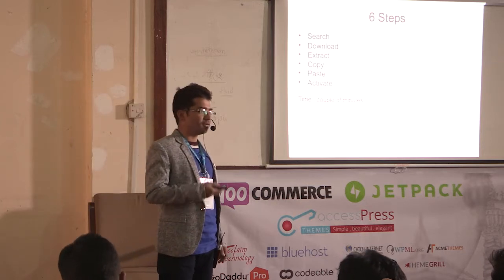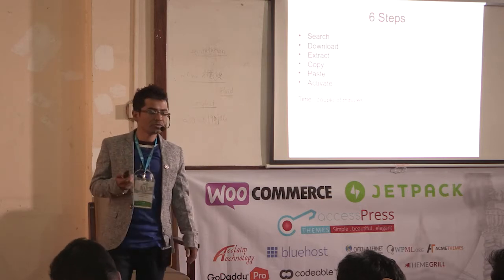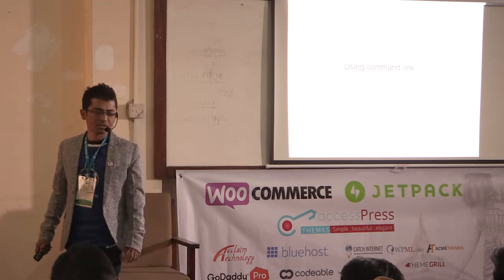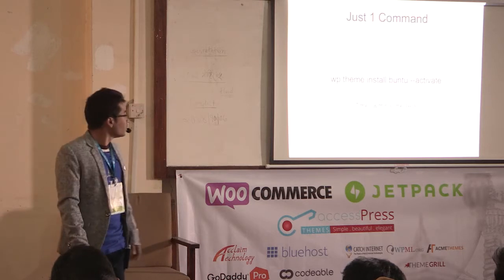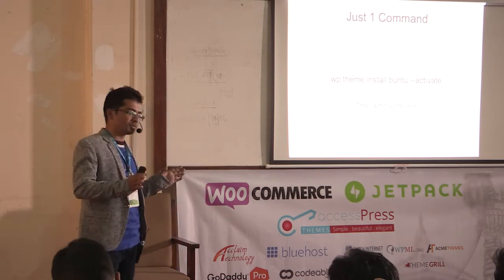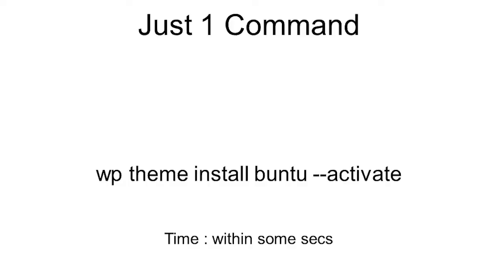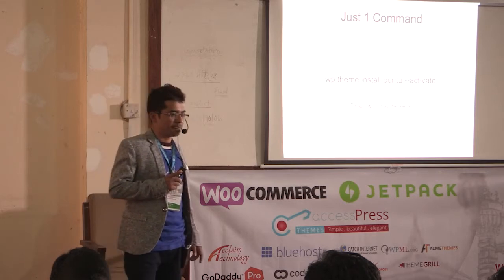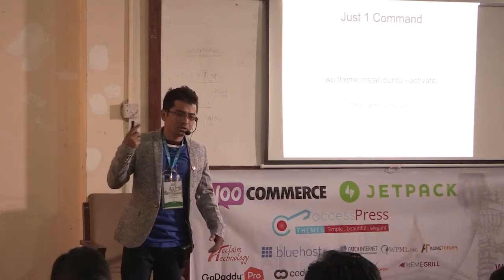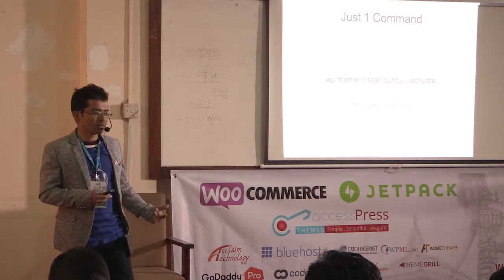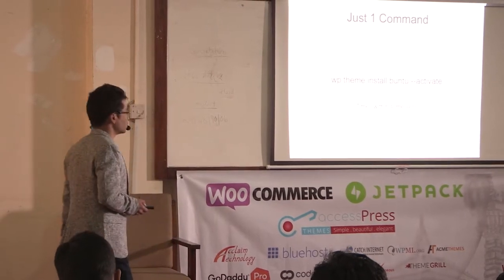If I do the same thing from the command line, can you imagine how many steps it takes? Actually, just one command is sufficient — just one step. If you've already opened the terminal, you just type: WP theme install, that theme name, --activate. Installation and activation can be done from a single command, and the command handles all the background tasks we manually do from the administration panel.